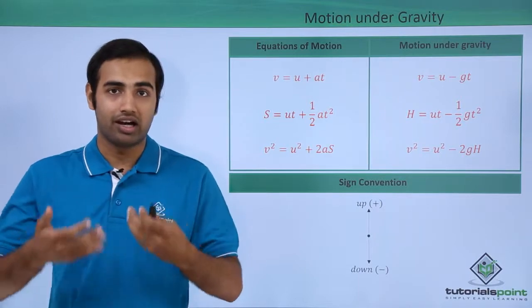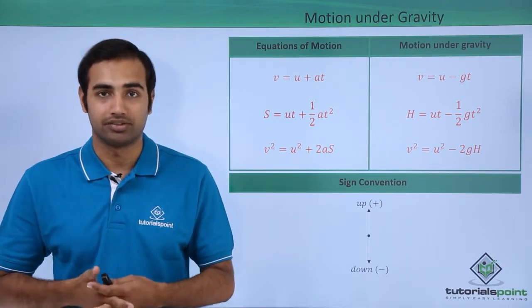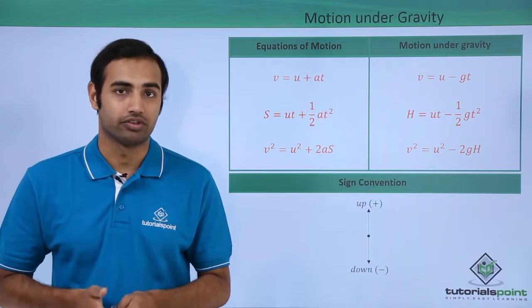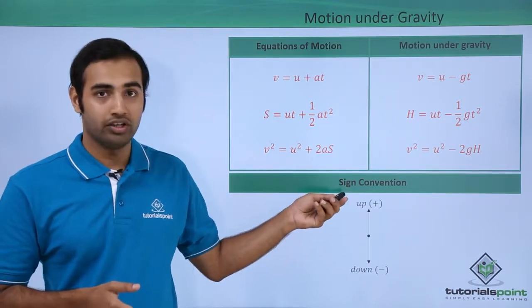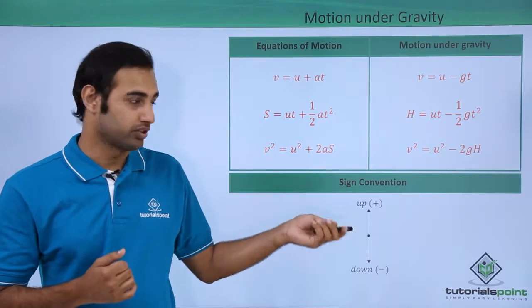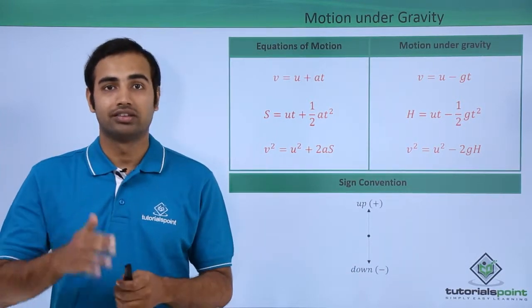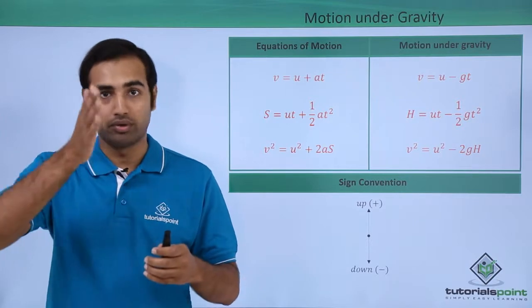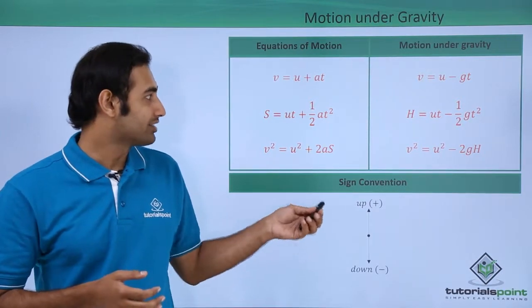Now let's look at how the equations will transform themselves if we apply them in the situation of free fall. First of all, the sign convention I choose for motion under gravity is up is positive and down is negative, the typical sign convention that you have learned in mathematics about the y-axis.